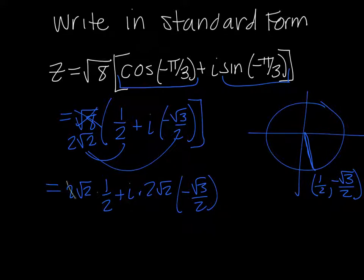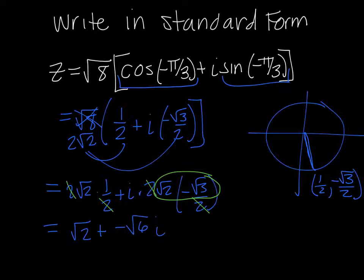So the 2s cancel on this first fraction, so now I have the square root of 2. And then the 2s cancel here, and I have the square root of 2 times negative square root of 3. When I do that, I get a negative square root of 6 i. So if I want to simplify it, it's the square root of 2 minus the square root of 6 i, and that's my answer.